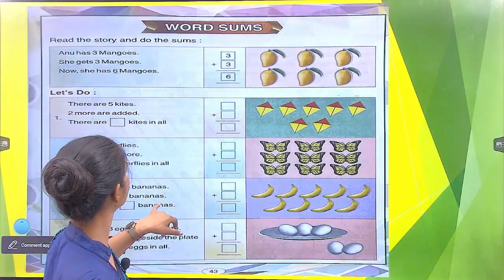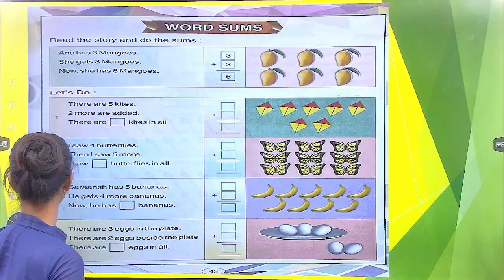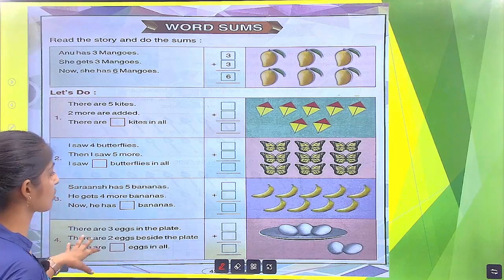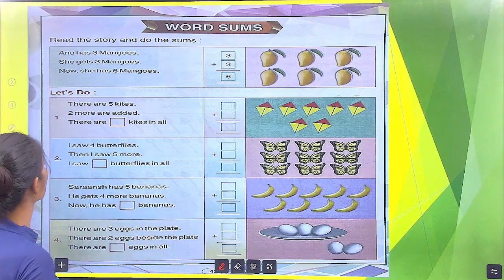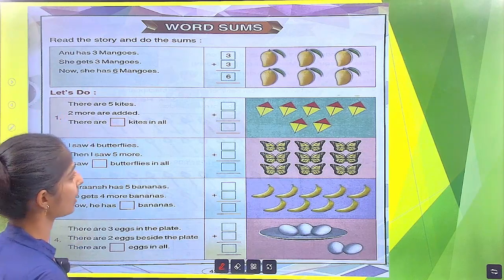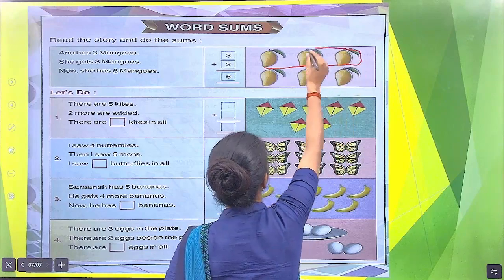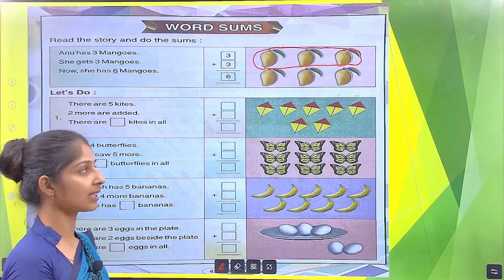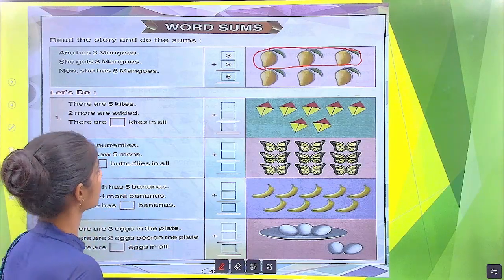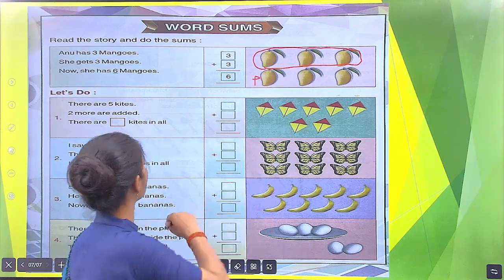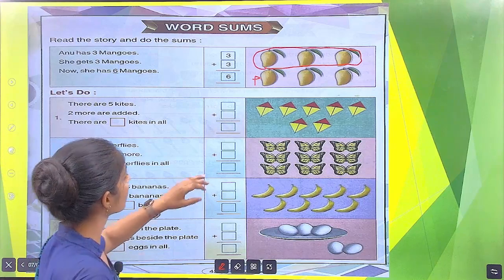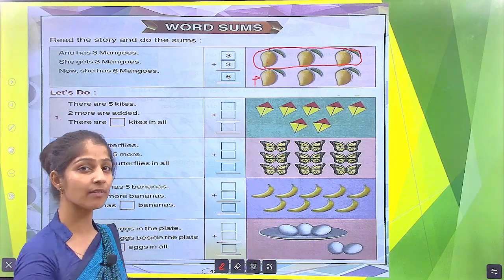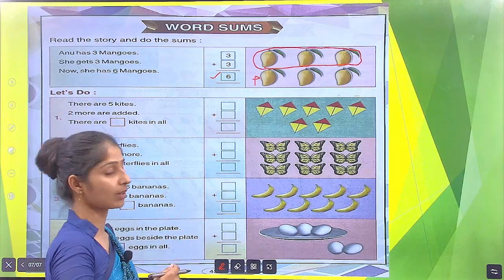Open your next page. Read the story and do the sum. Anu has 3 mangoes. How many mangoes does Anu have? 3. She gets 3 more mangoes: 1, 2, 3. How many total mangoes does she have? We calculate the total: 1, 2, 3, 4, 5, 6. How many mangoes does Anu have? There are 6 mangoes total.